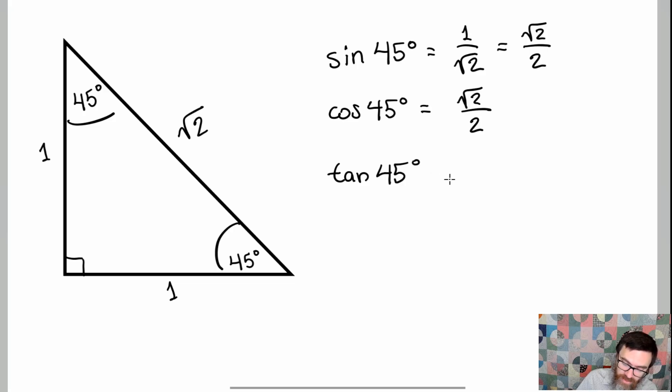The tangent of 45 degrees is going to be the ratio of sine to cosine, or opposite to adjacent, and that is just 1 over 1.